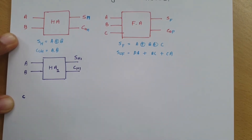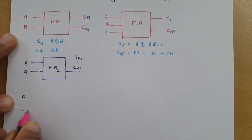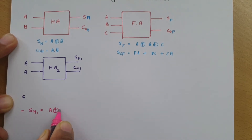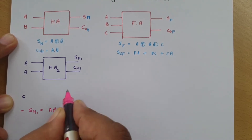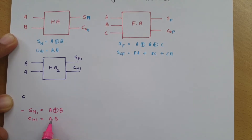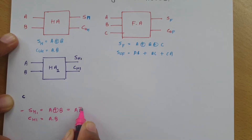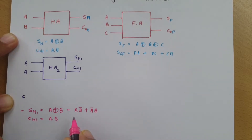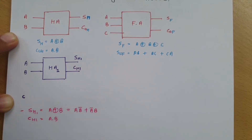If we look at these outputs, the sum SH1 is the XORing of A and B, that is A·B̄ plus Ā·B. And the carry CH1 equals A dot B.